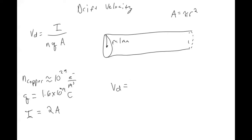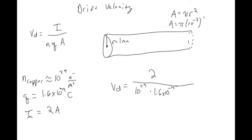Plugging our numbers into the formula: 2 for the current, divided by 10²⁹ for the electron density, times 1.6 × 10⁻¹⁹ for the charge of the electron, times π times (10⁻³)² for the area — because 1 millimeter is 10⁻³ meters. When you plug that in, you get approximately 4 × 10⁻⁴ to 10⁻⁵ meters per second.